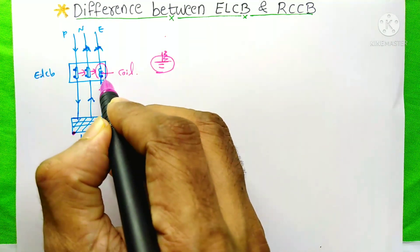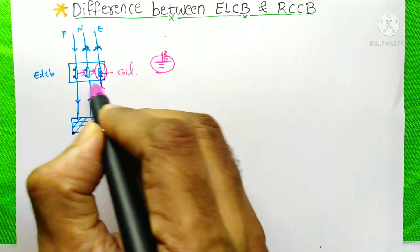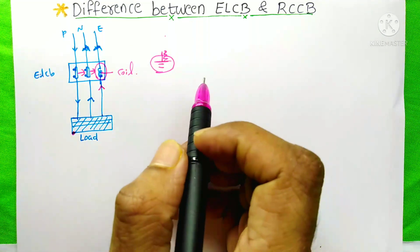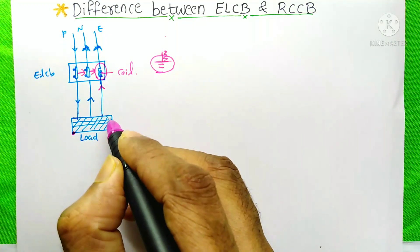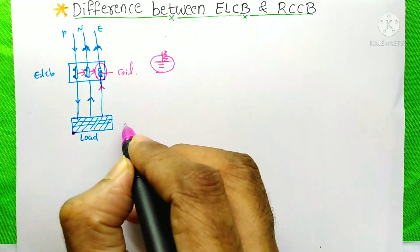At that time, this coil will not get actuated, and it could not cut the power supply. At that time, what will happen, if anybody touches this body part of this load, he will get a nasty shock.